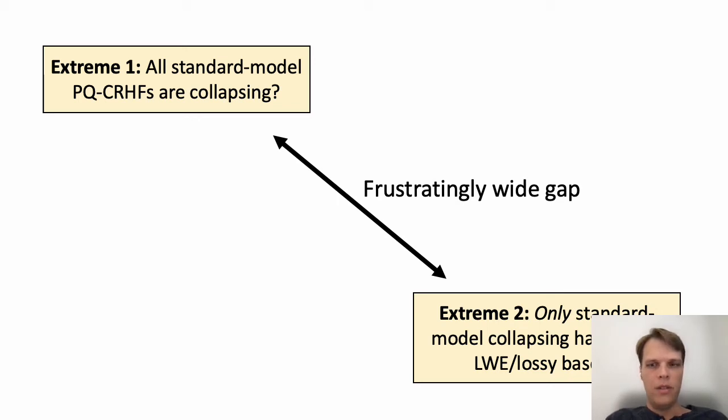On the other hand, the negative results are all in idealized models or rely on untested computational assumptions. So on one hand, it could be that the only standard model collapsing hash functions are those based on LWE, or it could just as easily be that all standard model hash functions based on post-quantum tools are collapsing.